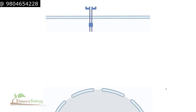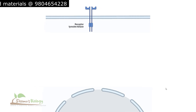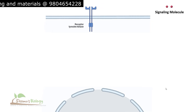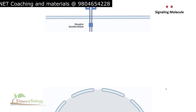There is a nucleus you can see at the bottom. Let's talk about the cell membrane and the receptor associated with the cell membrane. This receptor is known as receptor tyrosine kinase, and the signaling molecule — let's say epidermal growth factor or any kind of growth factor — is present.